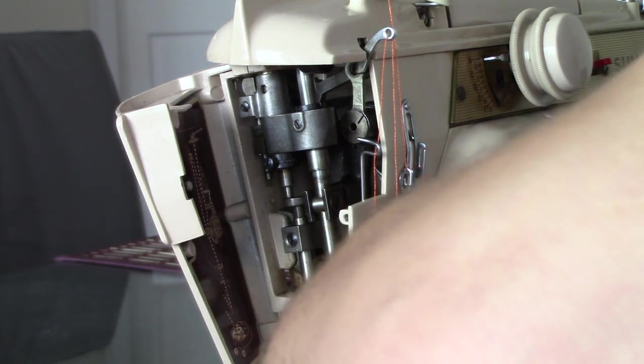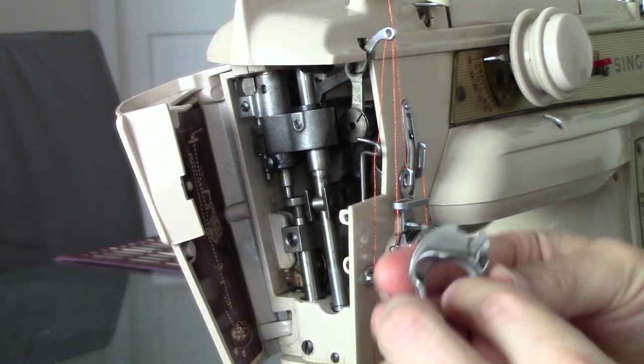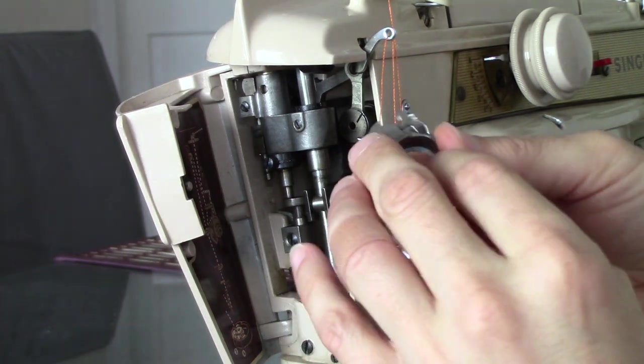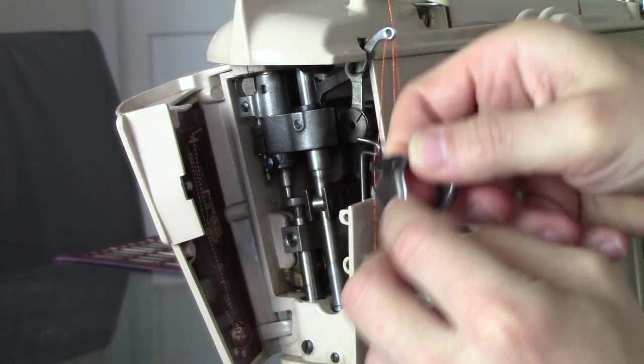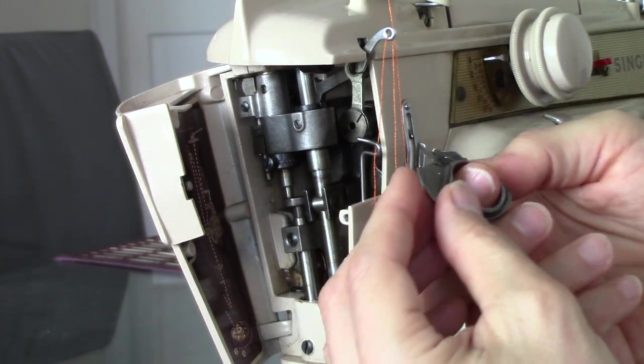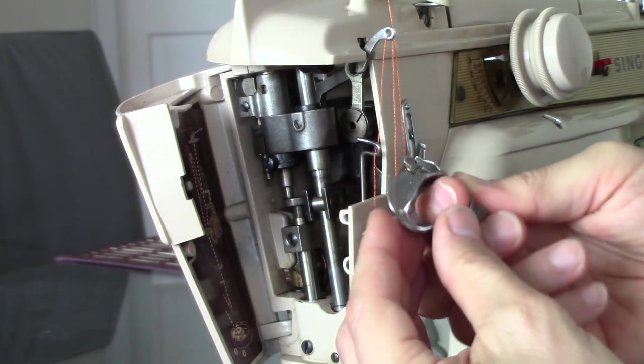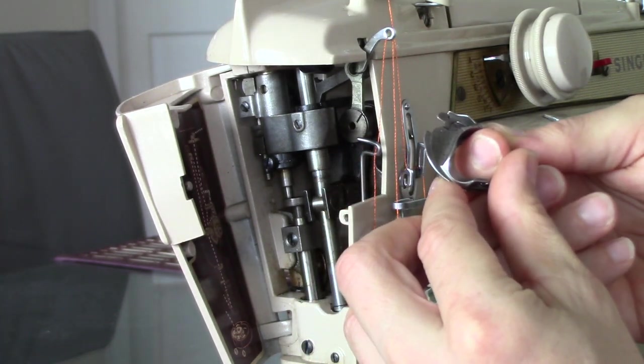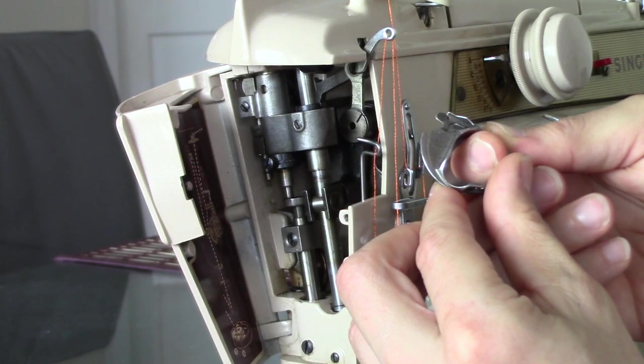The chain stitch bobbin case, the difference between this and the standard bobbin case is this little hooking mechanism here. So you can actually, if you were creative enough, you could actually make that hooking mechanism and put it on. So this says it's 50360.